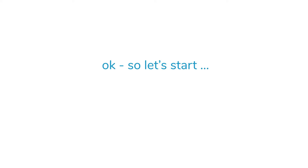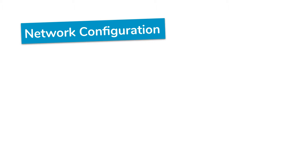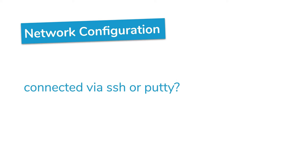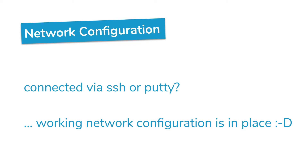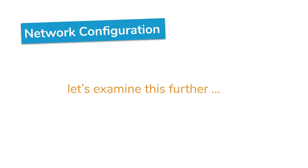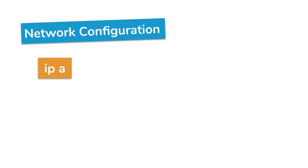So let's start. We are logged into a system and we want to know how the network configuration looks. If we have logged in via SSH or PuTTY, we already know there is a working network configuration in place, but let's examine this further. The first and shortest command you can use to get a first view on the network configuration is the command `ip a` — that's the command ip with the letter a as one single parameter.